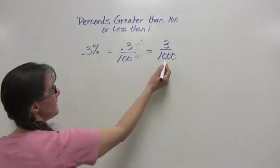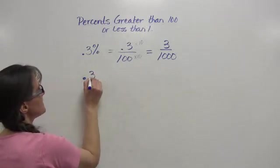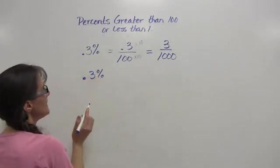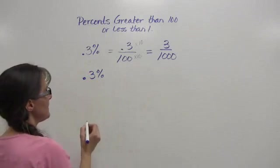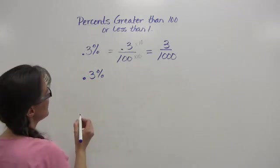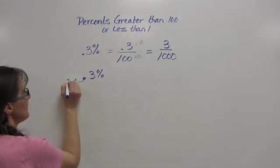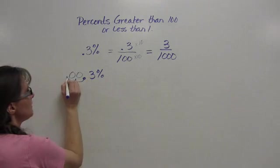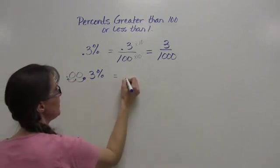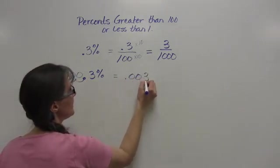So that's rewriting it as a fraction. Again, to rewrite that as a decimal, I just need to move the decimal place to the left two times. Which means that I would be filling in with two zeros, and my answer would be 0.003.